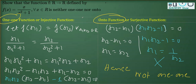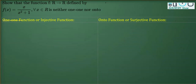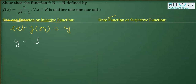Now coming to onto. For that, we assume f(x) = y, so we replace f(x) with y: y = x/(x²+1). We have to prove that the range is not equal to the codomain.